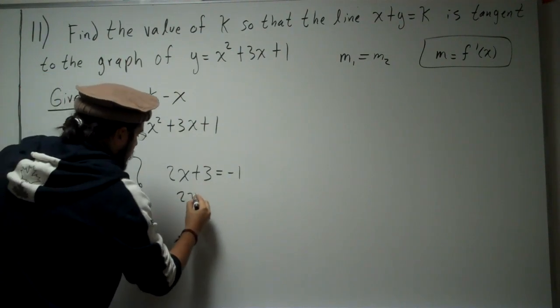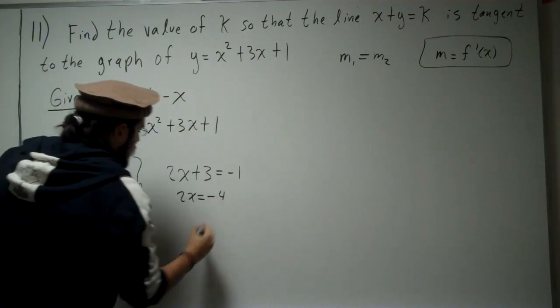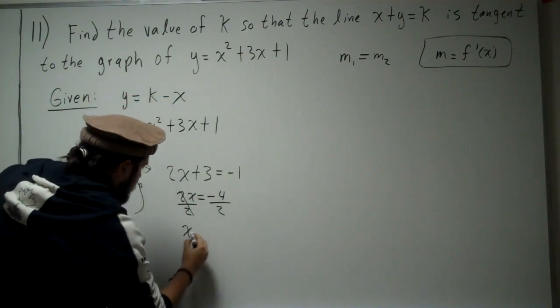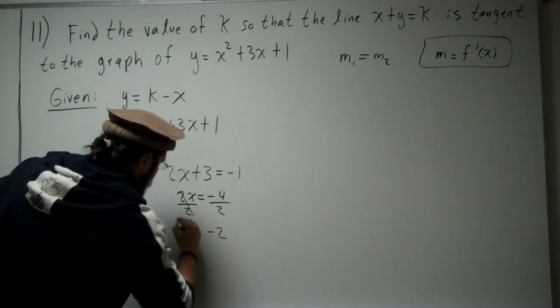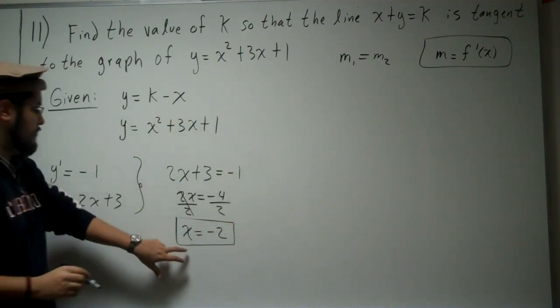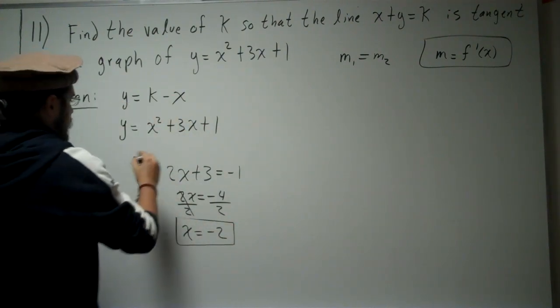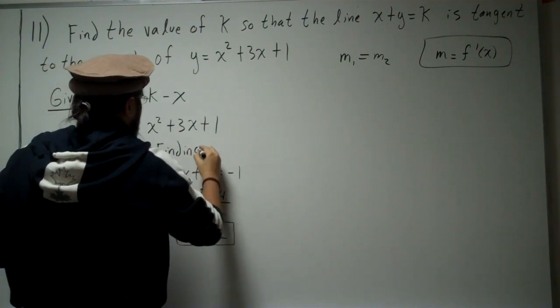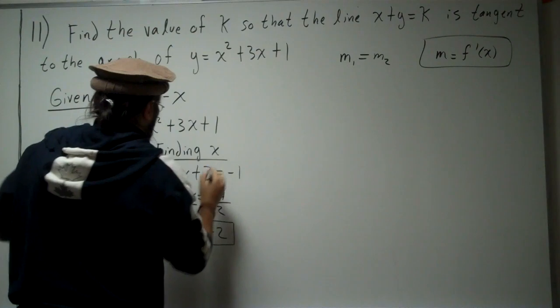Move it to the other side. We get 2x equals minus 4. Divide both sides by 2. We get x equals minus 2. Perfect. So now we have the x value. Let's plug it in. Now let's find y.